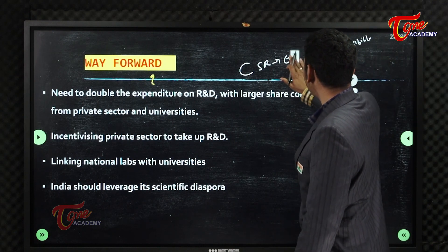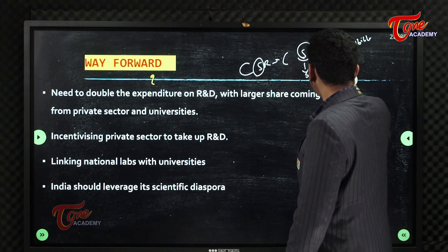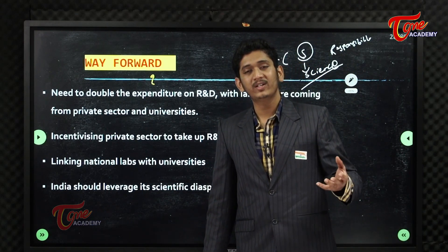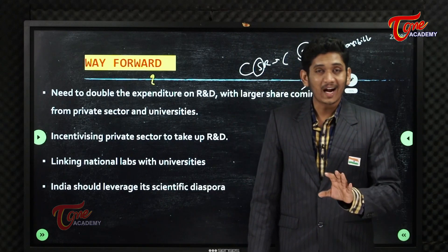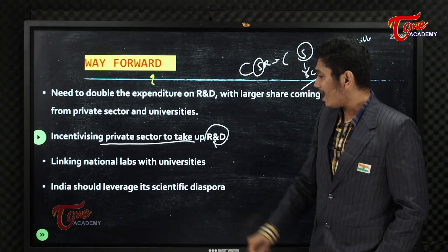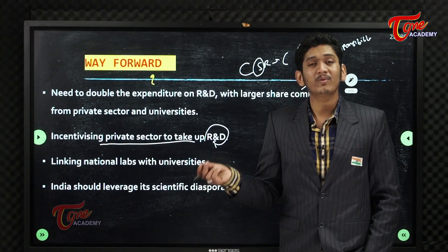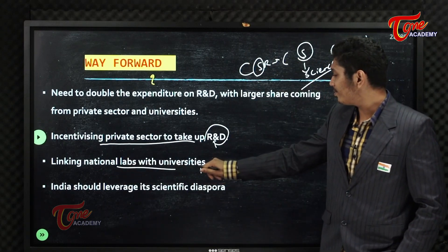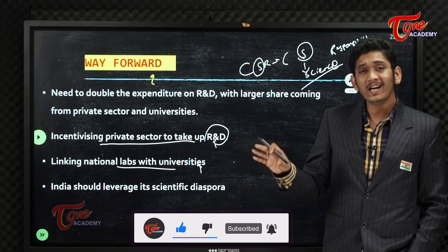Corporate Science Responsibility is a scheme to implement and incentivize the private sector to take up R&D. The private sector needs to contribute more. Another key solution is linking national labs with universities — connecting CSIR and similar institutions with universities to bridge ground-level and policy-level research.